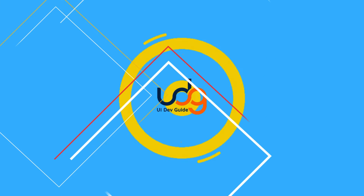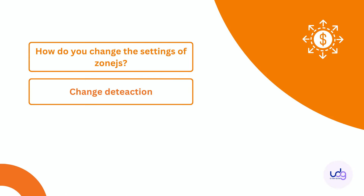Have you heard about zone.js in Angular? I've heard of it for asynchronous programming, but I'm not very familiar with it — I know it's useful for asynchronous operations and data binding. What is change detection in Angular? For any change in event emitters or inputs in a component, a change detection cycle happens and goes through all related components, checking all of them for that single change.